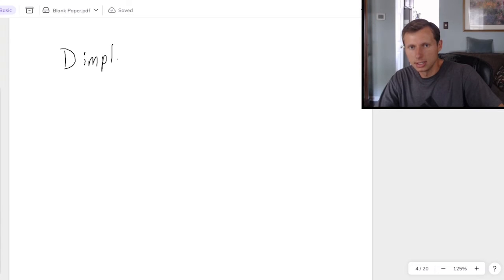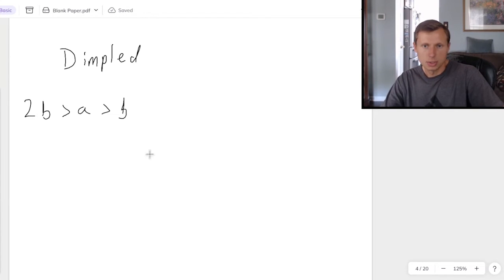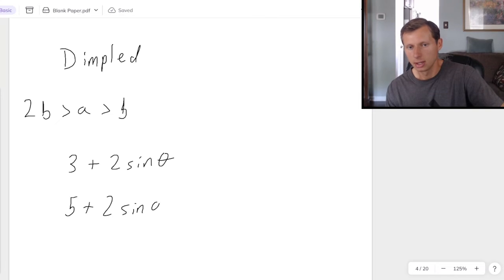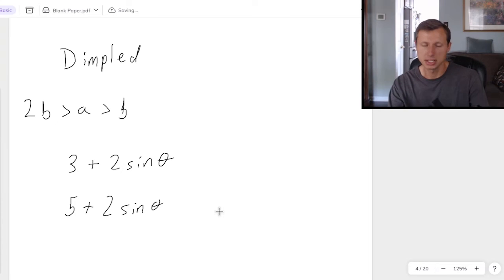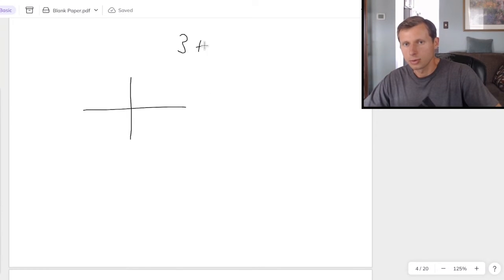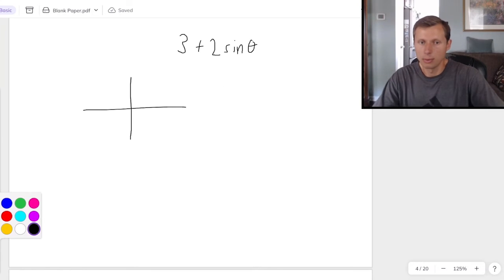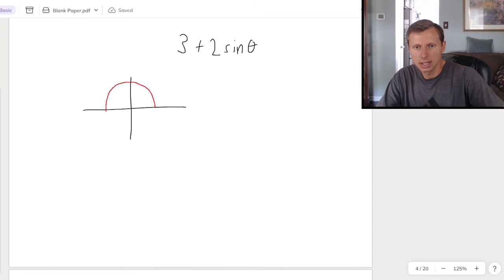Then the third case we can have, this is known as the dimpled limaçon, and this is when A is greater than B, but we don't want it to be greater than 2B, so we're going to stick it in between B and 2B. So, for instance, this would be examples like 3 plus 2 sine theta, that'd be good, but 5 plus 2 sine theta would not be a good example, because now we're bigger than 2B, or B is 2. And again, the pluses and the minuses don't matter, just determines which way this dimpled limaçon will point. So, if I did want to graph 3 plus 2 sine theta, first I know it points upwards, because it's positive sine theta, and the dimpled limaçon looks something like this.